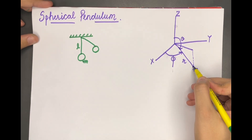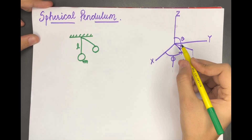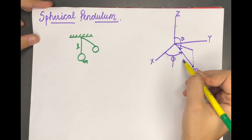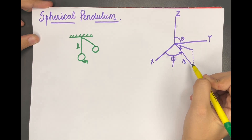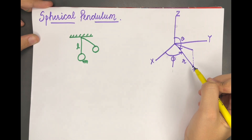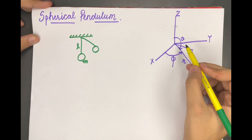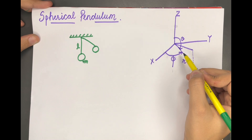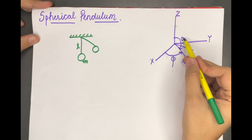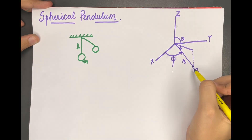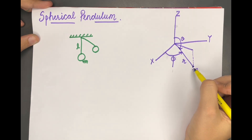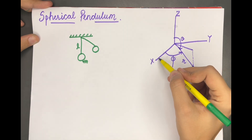The position is not depicted by r because r has to remain fixed, since it is the length of the string. So the location of the bob will be depicted by φ and θ. θ is the angle between the string and the z-axis, and φ is the angle between the x-axis and the string.